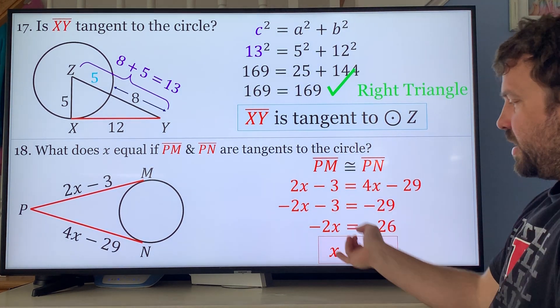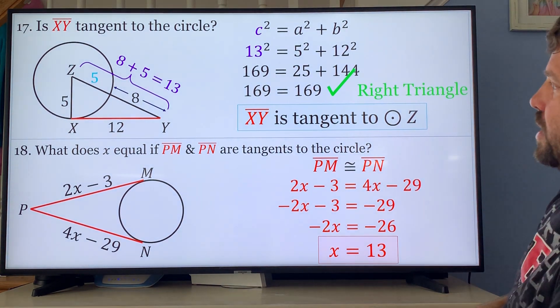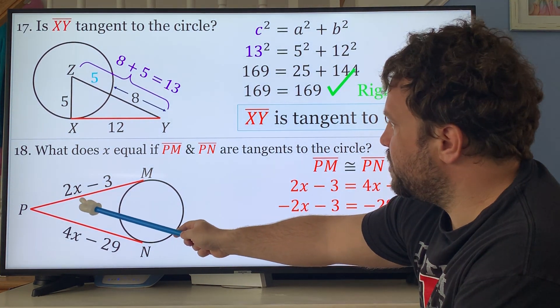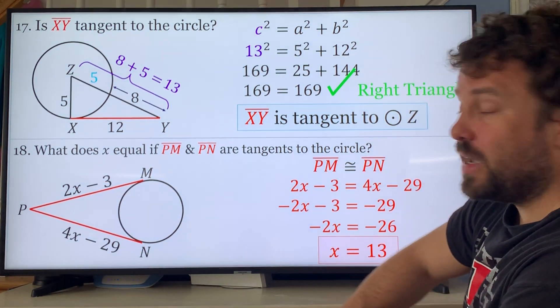If you flip these around you get the same answer either way. If you want to find out what they actually were: 2 times 13 is 26 minus 3 is 23. This would be 23 as well because they're equal.